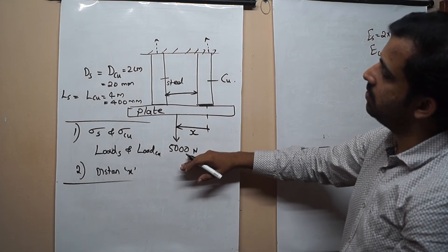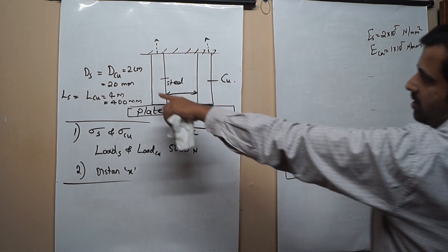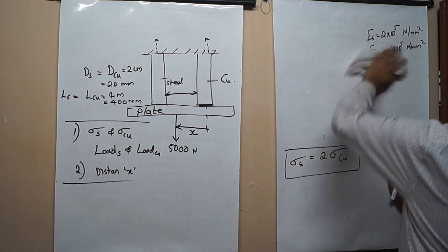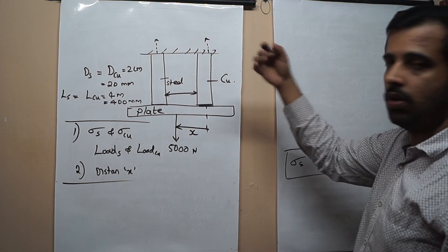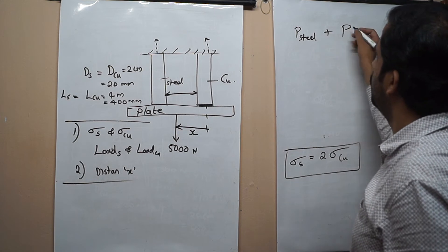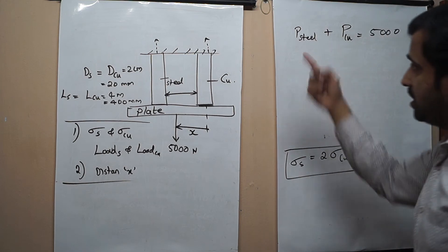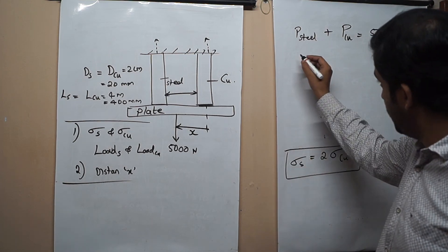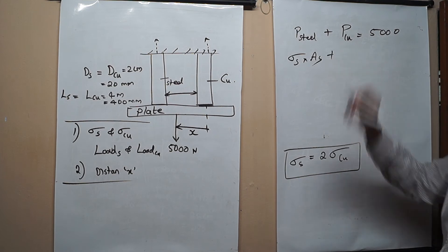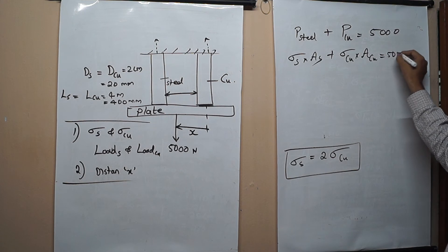We also know that the 5000 Newton load will be shared between the steel and the copper. So the reaction on steel plus the reaction on copper equals 5000 Newton. Since load equals stress times area, I can write: stress of steel × area of steel + stress of copper × area of copper = 5000 Newton.